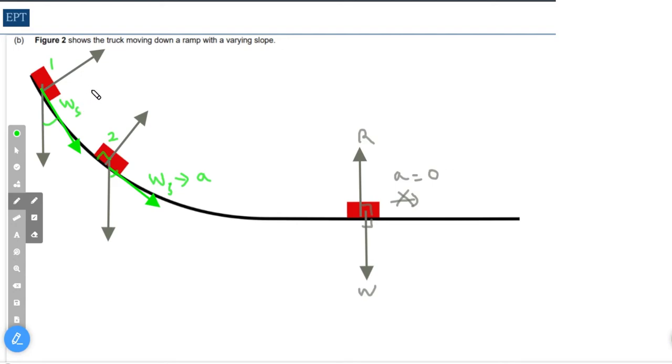So that means that the acceleration in position one is bigger than in position two, and as we saw it's zero in the last part.